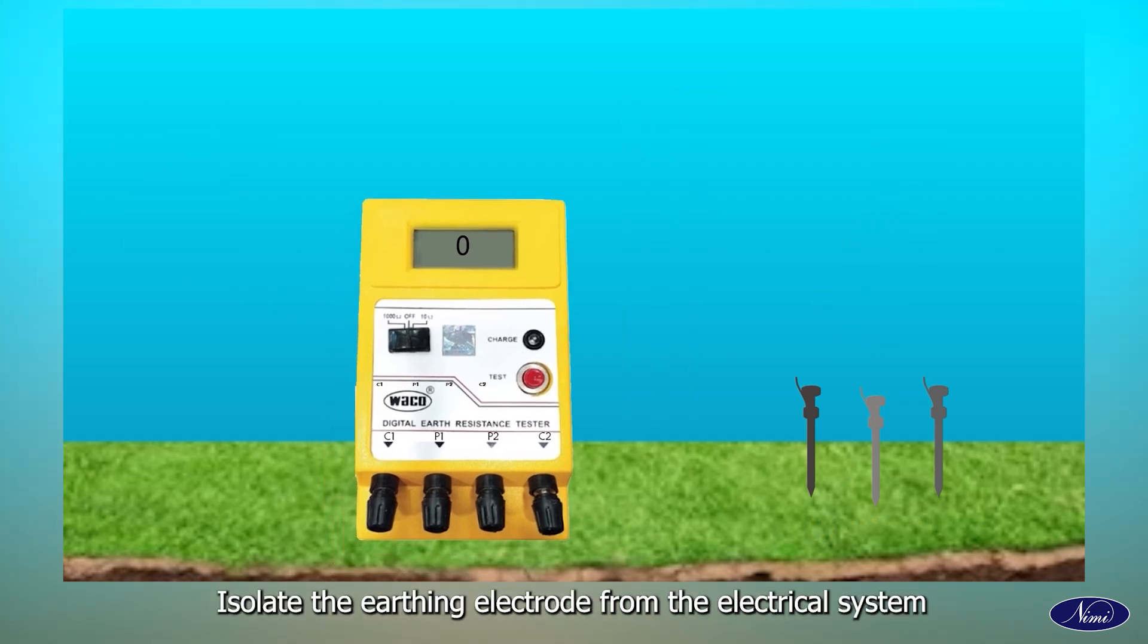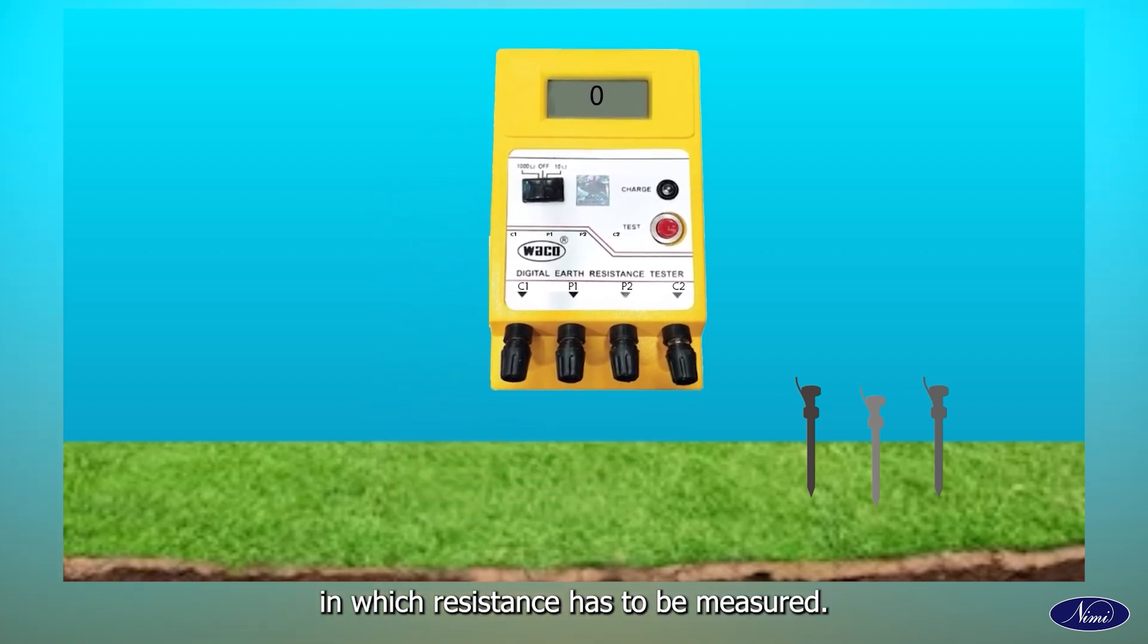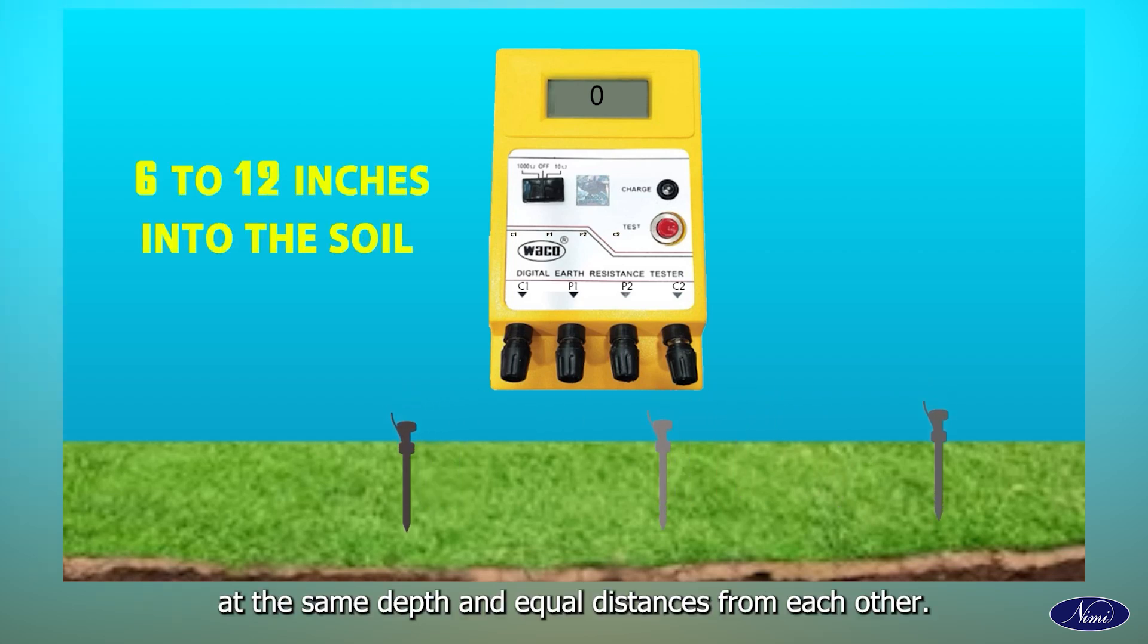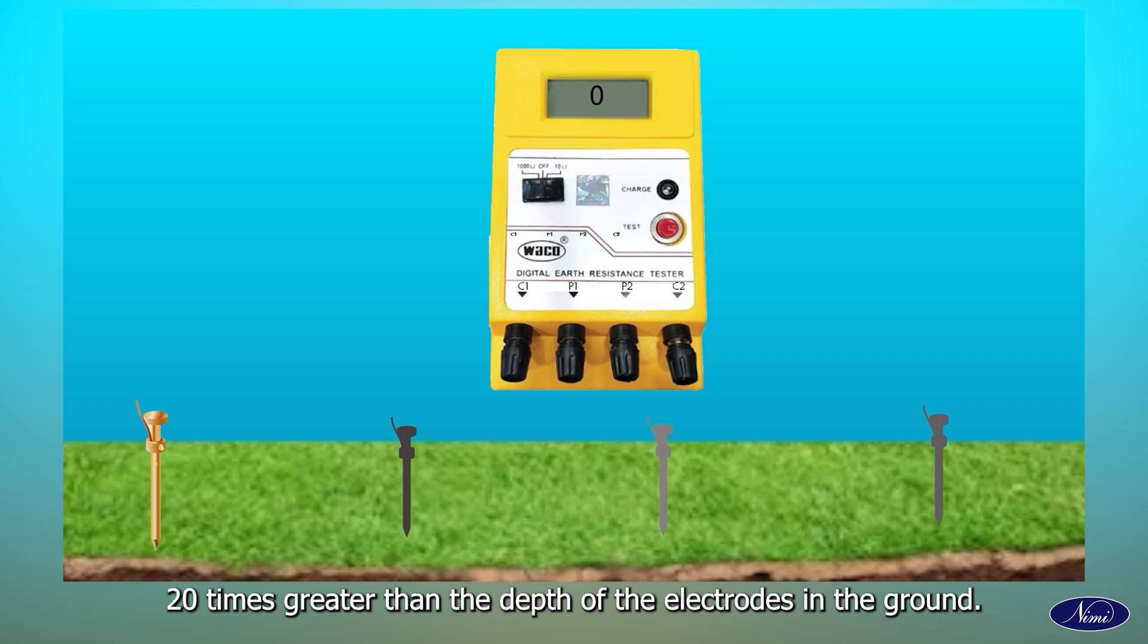Isolate the earthing electrode from the electrical system in which resistance has to be measured. Drive each electrode 6-12 inches into the soil at the same depth and equal distances from each other. The distance between Earth electrodes should be at least 20 times greater than the depth of the electrodes in the ground.